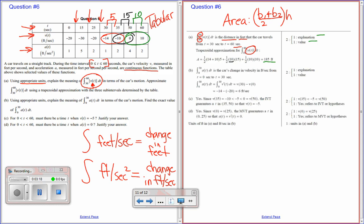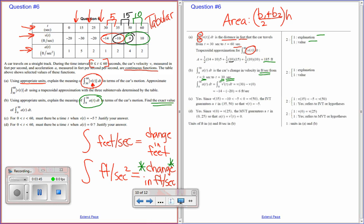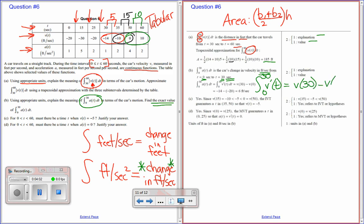Now part B is very similar. The only thing different is that you have to explain the integral of acceleration. So that is going to be the change in velocity in feet per second. So again, you have to have the units. You must say feet per second from t equals 0 to t equals 30 seconds. In order to get the point, you need both units and telling me what it's the change in. Now here we want to find the exact value. So basically we're looking for area under the curve. Now we know that the integral of the rate of velocity from 0 to 30 by the fundamental theorem is going to be velocity evaluated at 30 minus velocity evaluated at 0.